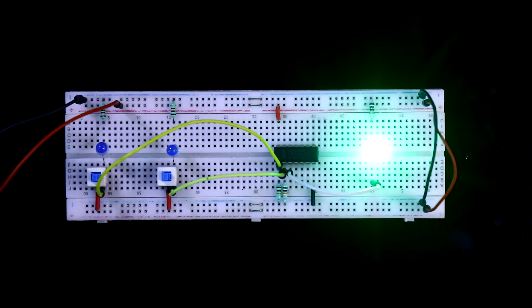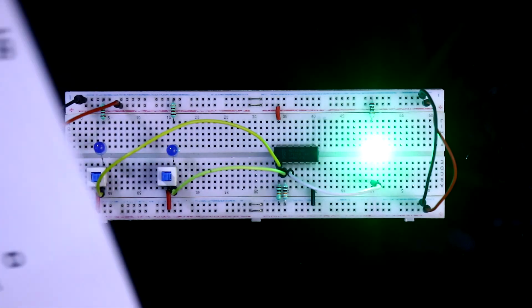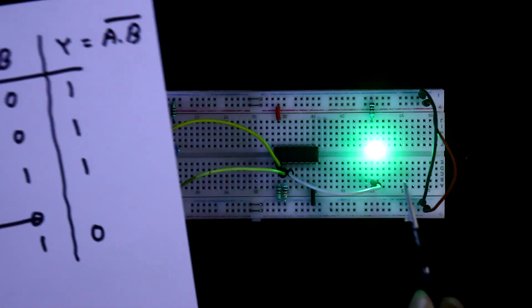According to the truth table, when both A and B are 0, then we should get the output. We are getting the output.